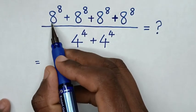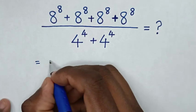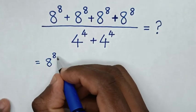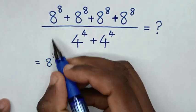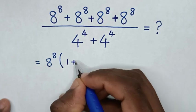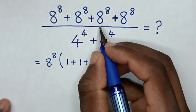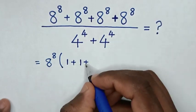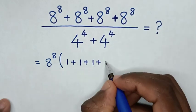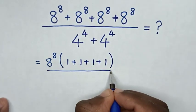From the numerator, 8 power 8 is common, so we take 8 power 8 out of the bracket. Then this divided by this is 1, plus 1, plus 1, plus 1. Then bracket over.